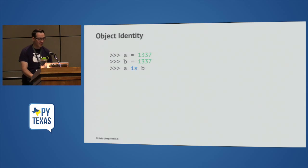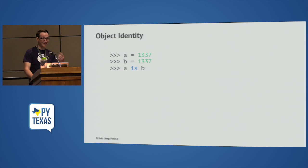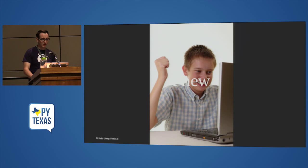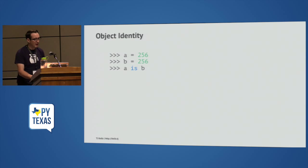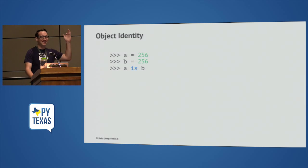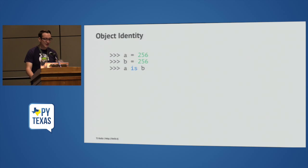Let's talk about object identity. If I assign a and b to 1337 and check 'a is b', that's false — which makes sense, because it's object identity. A is not B; they just happen to be names that share the same values. But if a equals 256 and b equals 256, that evaluates to true. Why?